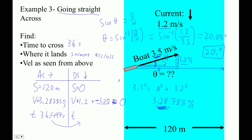So what we did to figure out going straight across: we knew the downstream displacement was zero, so the current and the upstream component had to add to zero. This component had to be upstream 1.2, and the current was downstream 1.2. So we know this side is 1.2, and then the Pythagorean theorem gives us the across velocity.